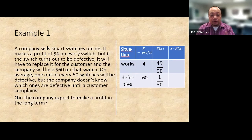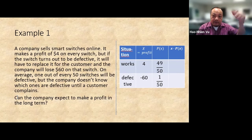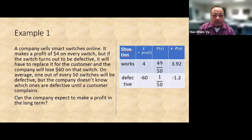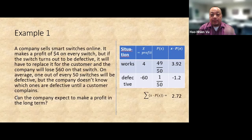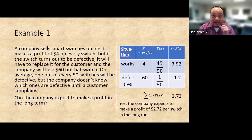All we need to do is multiply x times p of x and then add them. Four times forty-nine over fifty, negative sixty times one over fifty. Add that last column equals 2.72. The expected value of the profit is 2.72, which is a positive number. So yes, the company can expect to make a profit in the long term, a positive profit of 2.72.